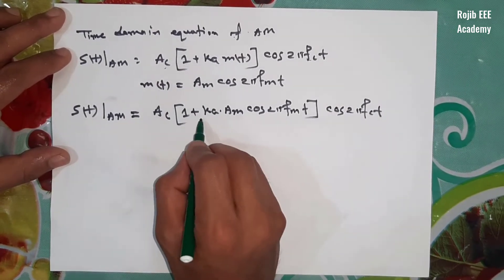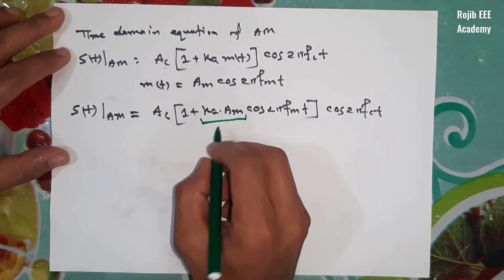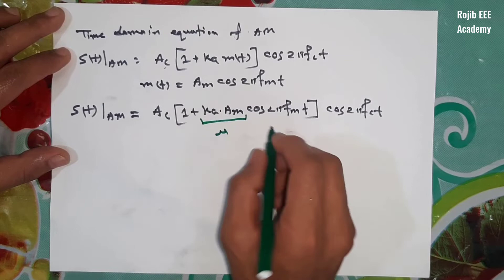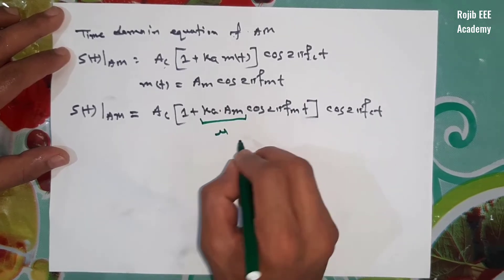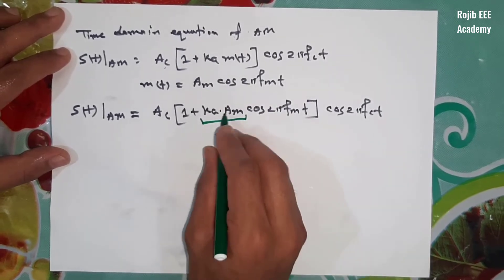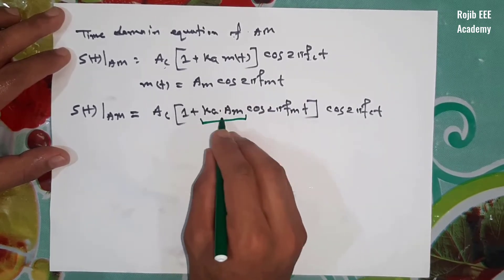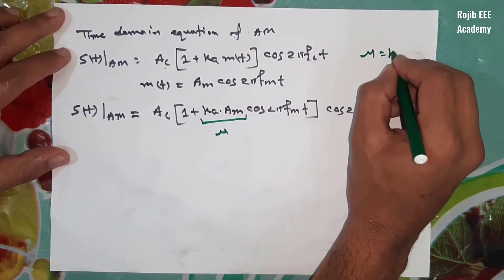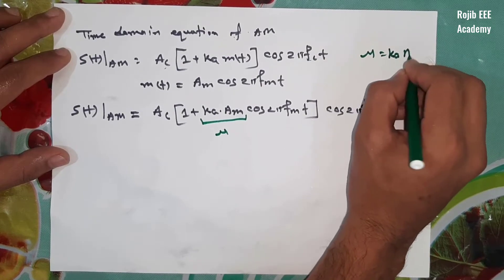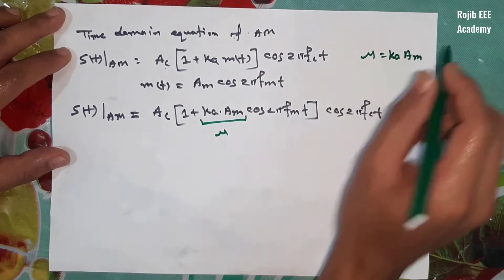So this involves the two of us. For example, let's look at the two components. We have to define mu, and mu equals kA times Am — so mu = kA·Am.